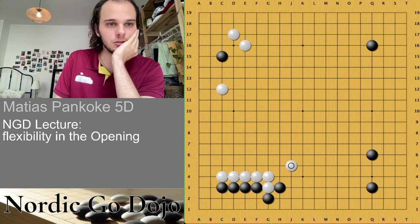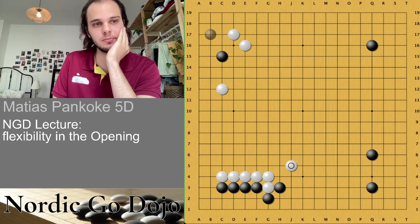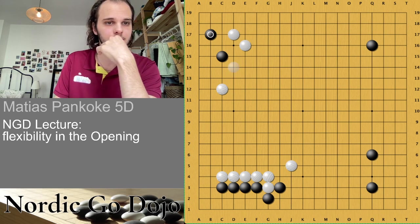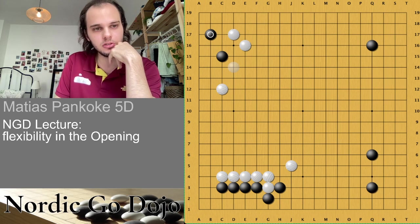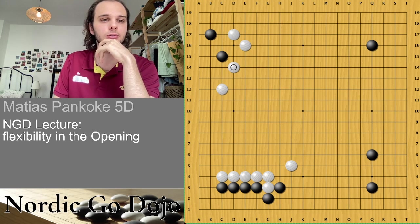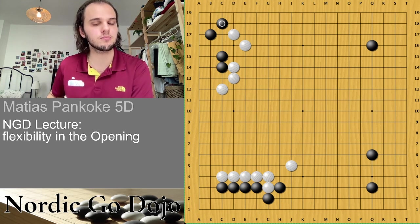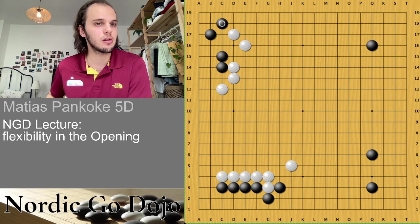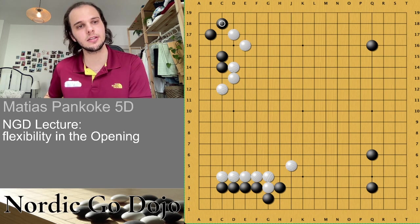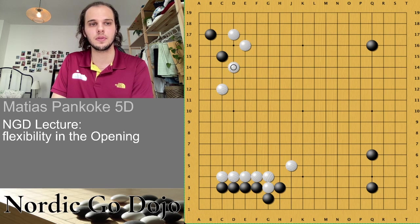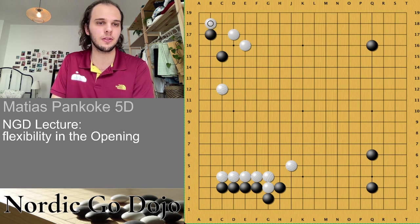Then black decided to move the stone. This is one option I want to talk about. Another option is this one: if black plays here, white's only really acceptable choice is to let black live like this. The black group is alive, and white has sente again and some influence. If white plays this other move, the exchange locally is quite good for black, so later black can choose whether to go for corner life or to save the stone and get another good exchange.